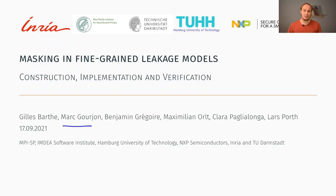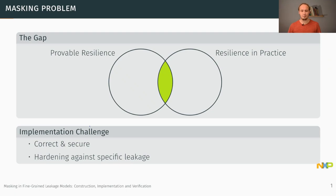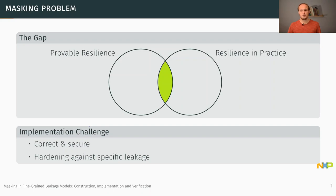The problem is that every proof comes with an assumption, and in reality these assumptions are often violated. For example, the leakage behavior considered in the proof differs from what actually happens on a real device — the observable leakage in practice is much greater, more diverse, and different from what is considered in the proof. This means there is a gap between provable resilience and resilience in practice.